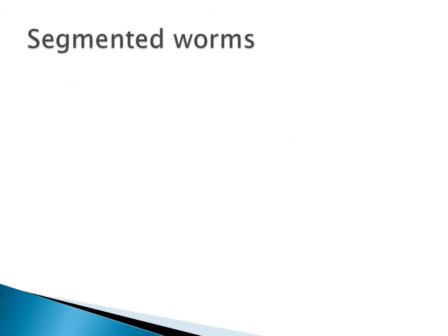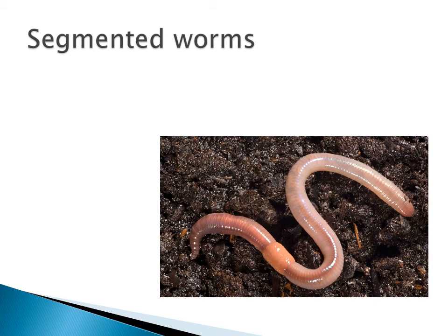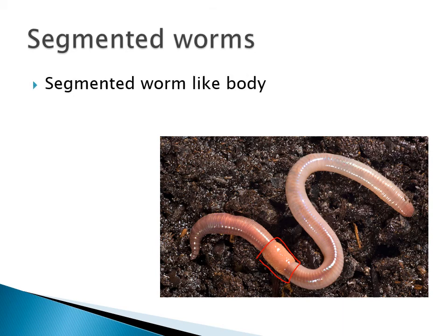Then we have segmented worms — the kind of common garden worms you're more likely to see in the soil. As you can see, they have no eyes as such, but they can sense their way around and pick up nutrients from the soil. They also have a saddle structure which they use to reproduce — one worm comes in contact with another and they can reproduce sexually using these parts. Examples include earthworms and leeches.